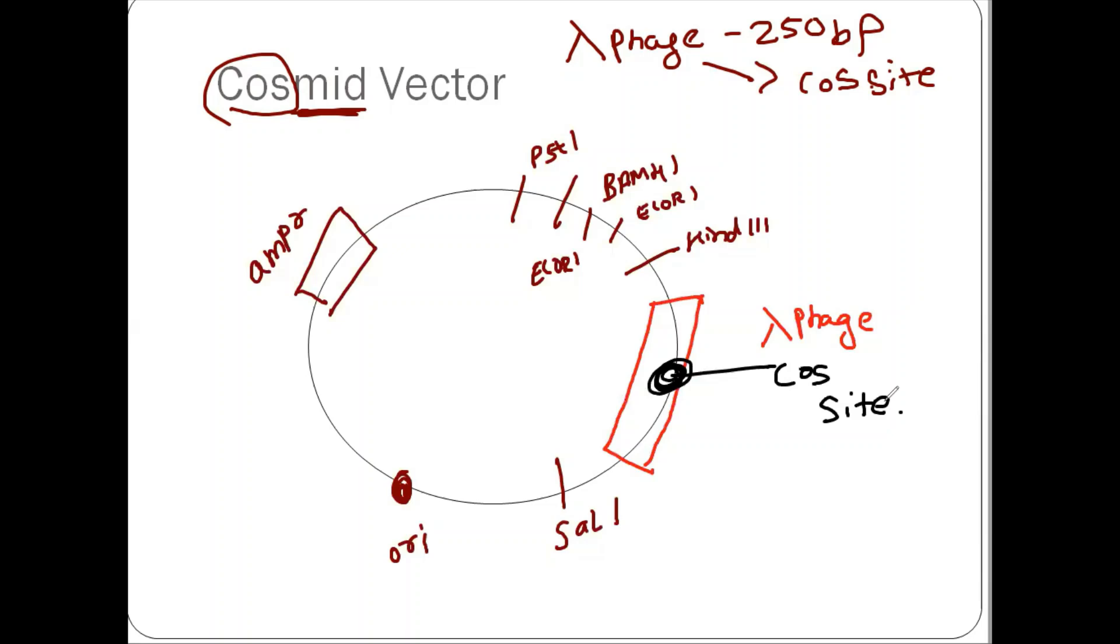So the cosmids can carry DNA insert three times as large as those carried by lambda itself. And the features are you have the DNA insert which is nearly 40 kilobase pairs in size, and they can be packed into lambda particles. And it can infect the host cells. And not only that, these vectors are amplified and maintained in the same manner, like the plasmids are amplified and maintained.